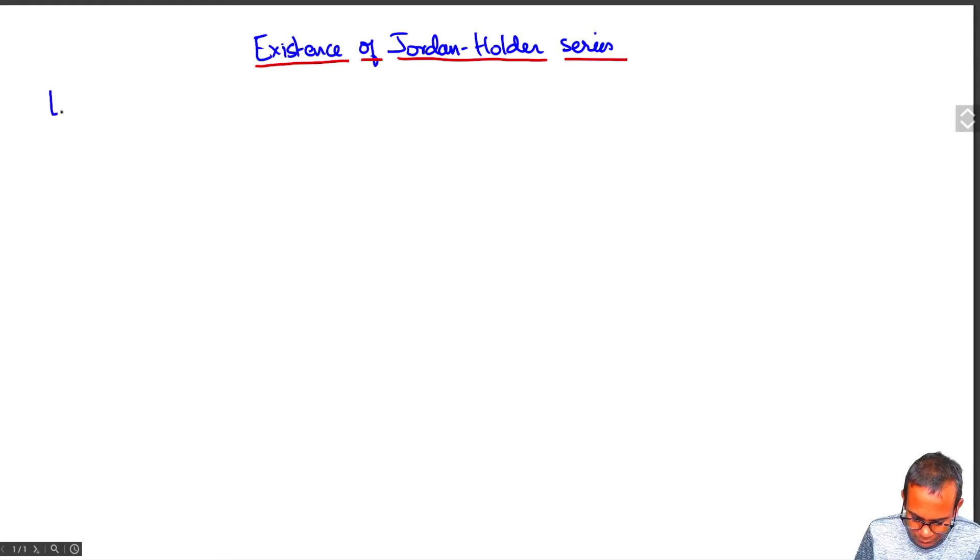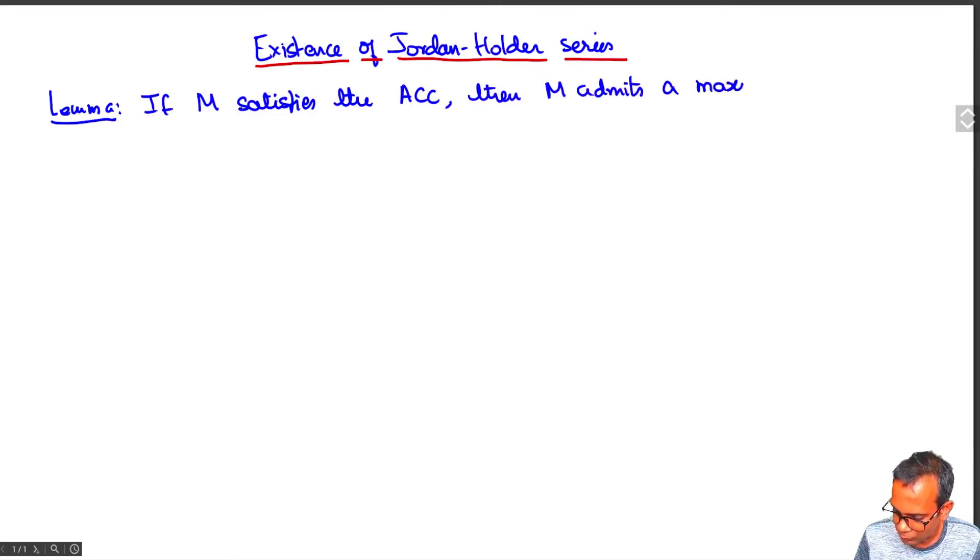To prove this, first we prove the following lemma: if M satisfies the ascending chain condition, then M admits a maximal proper submodule.